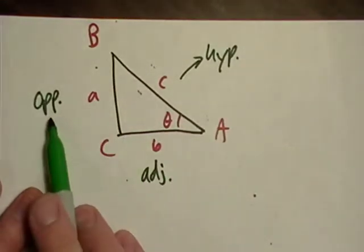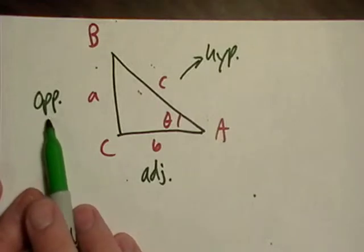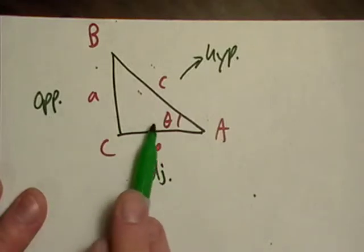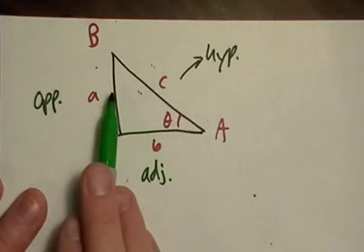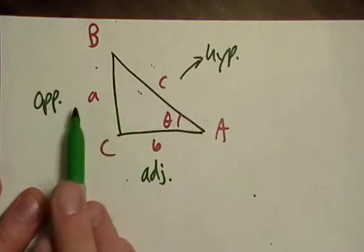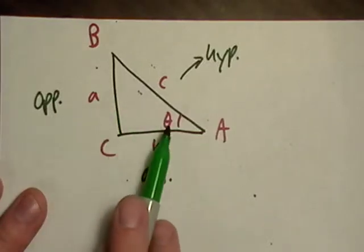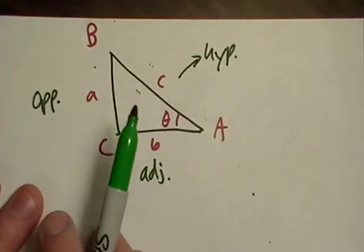The opposite side is the side that's opposite of the angle. Like here's the angle, if I just go across here, I'm at A, so A would be the opposite side right here.